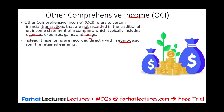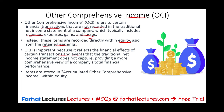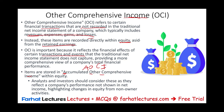OCI is important because it reflects the financial effect of certain transactions and events that the income statement doesn't capture. If you want a comprehensive view of income and losses, you have to look at other comprehensive income. The name is misleading because sometimes you could have other comprehensive losses. Items are stored eventually in accumulated other comprehensive income, AOCI. Analysts and investors should look at these items because they reflect company performance not shown in net income, and if you want to understand changes in equity from non-owners activity, you have to look at other comprehensive income.